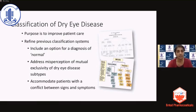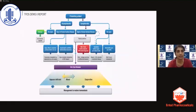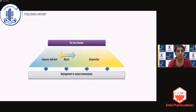To address this misperception of mutual exclusivity of dry eye disease subtypes, and to accommodate patients with a conflict between signs and symptoms — which is what we normally see when examining patients of dry eye — and also to include an option for a diagnosis of so-called normal, the classification system was refined. The aim of classifying any disease is to improve patient care. When you look at the classification provided by the TFOS DEWS II report, it appears very daunting, so let's break it down into smaller components.